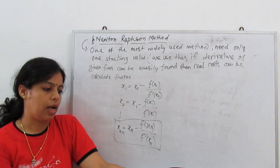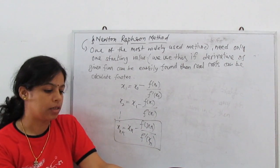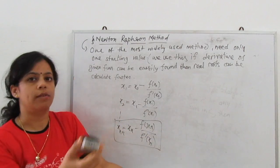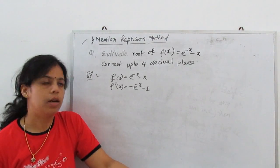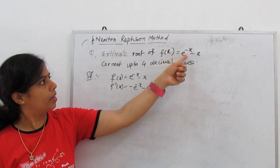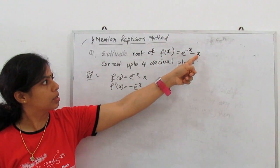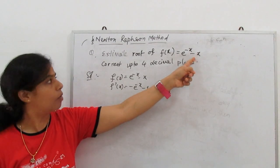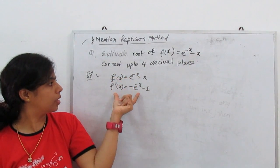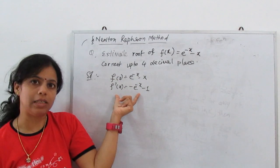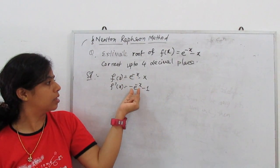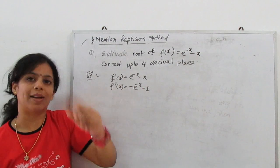Let us work on a problem so you better understand how to use this method. Estimate the root of f(x) = e^(−x) − x, correct up to 4 decimal places. Our f(x) is this. If we differentiate, it can easily be found. The derivative of e^(−x) − x is −e^(−x) − 1.